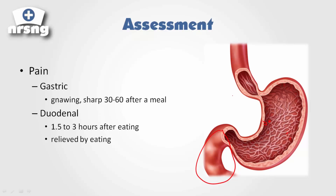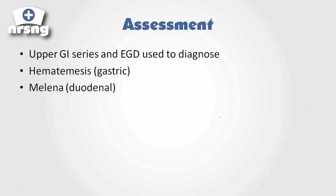It's important to understand that if you get a question on the NCLEX or on a test about time frame, just think about where the food is along the GI tract. If it's 30 to 60 minutes after eating, we're talking about a gastric ulcer. If it's one and a half to three hours after eating, we're talking about a duodenal ulcer.